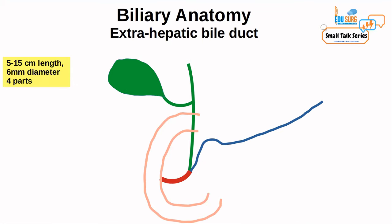Coming to the extrahepatic bile duct, as we have seen in this diagram, the extrahepatic bile duct is 5 to 15 centimeters in length — the standard MCQ answer is 8 centimeters. The normal diameter is less than 6 mm. If it is more than 6 mm there can be a pathology in the bile duct. It has four parts.